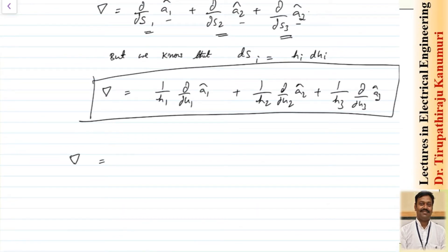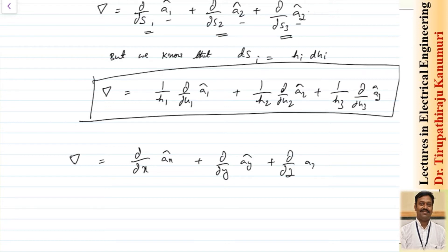Let us see what the values will be for different coordinate systems. For the rectangular coordinate system, we know h1 = h2 = h3 = 1. So this becomes ∂/∂x in the x direction, plus ∂/∂y in the y direction, plus ∂/∂z in the z direction. This is clear.